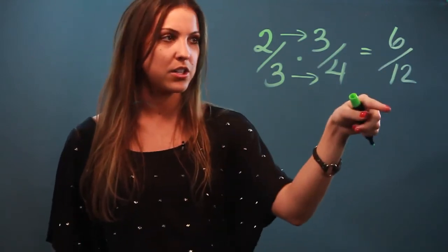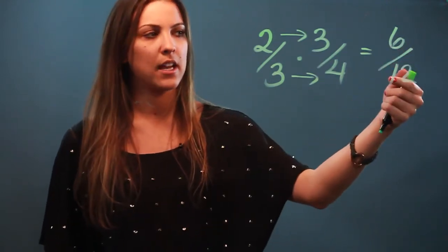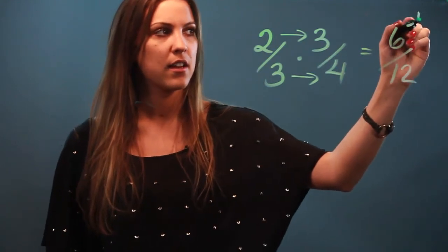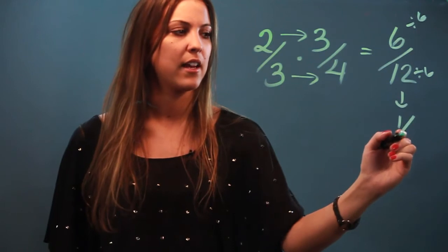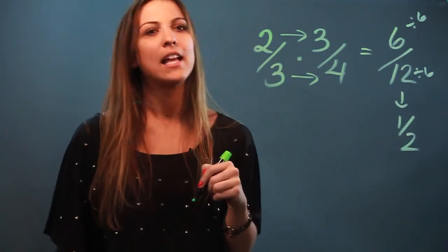I see that the numerator and denominator are both divisible by six, so if I divide top and bottom by six, I'll be able to reduce that to one-half. All right, let's do another example.